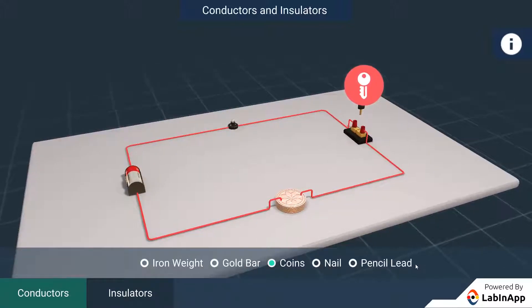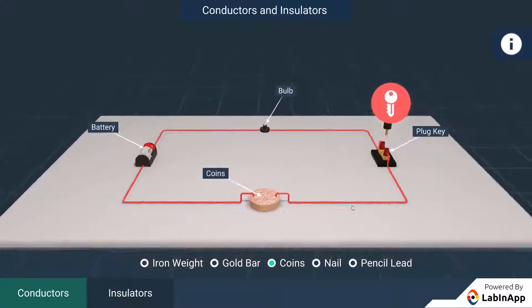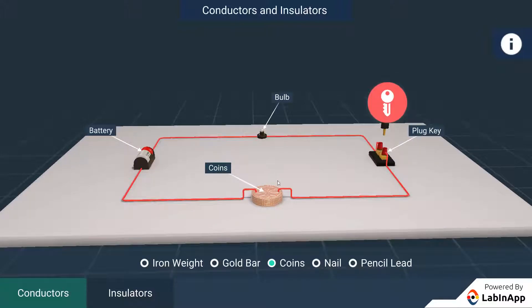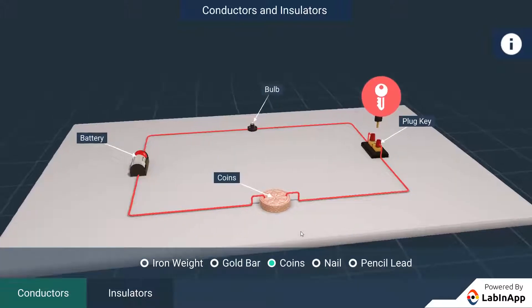What happens when we connect the ends of the wire with some materials like a copper coin, iron block or rubber?